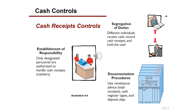As part of the internal control system, there must be practices to help with cash control. Cash receipts controls include segregation of duties — different individuals receive the cash, record cash receipts, and hold the cash, so the whole cycle cannot be in one employee's hands, which would make it easier to embezzle money. Another is establishment of responsibility, where only designated personnel are authorized to handle cash receipts.